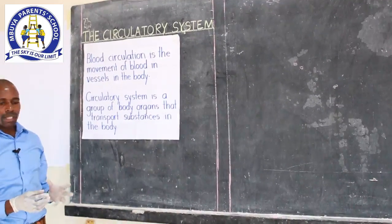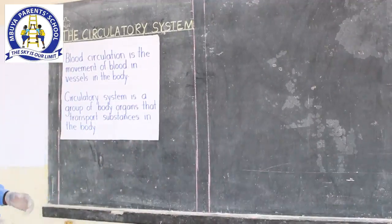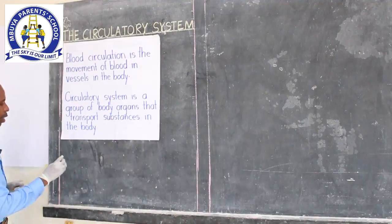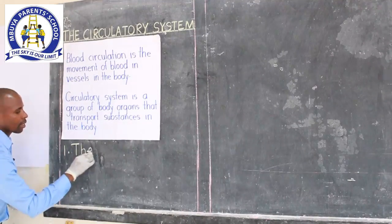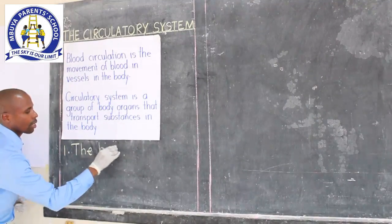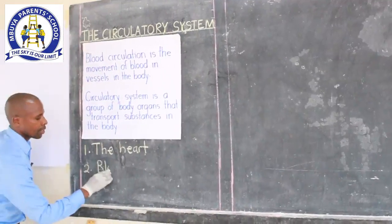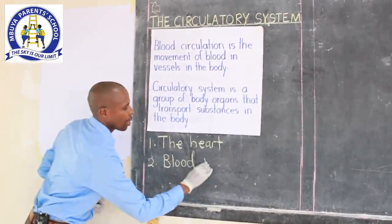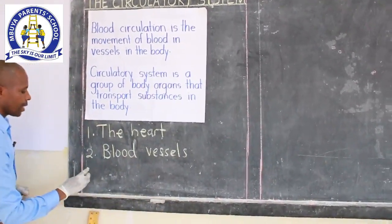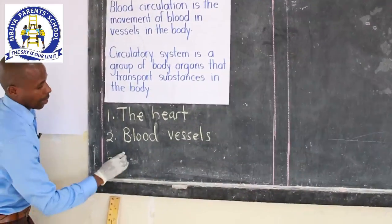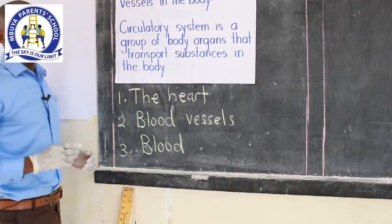The circulatory system has three components. The first one is the heart. The second one is blood vessels. And the third is blood as a component of the circulatory system.